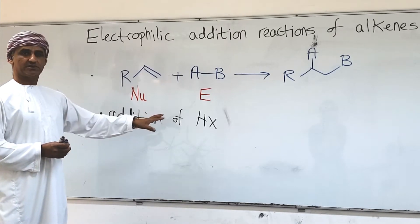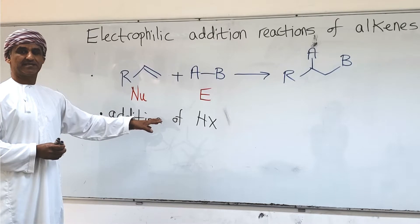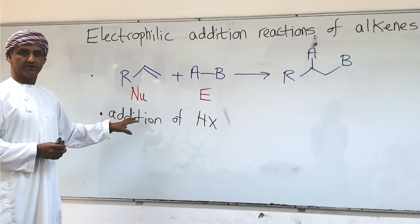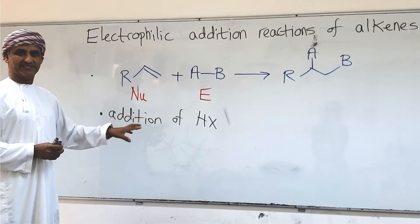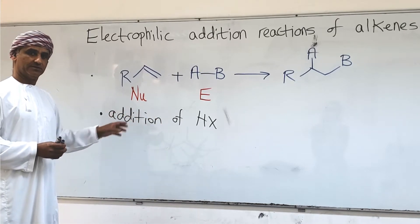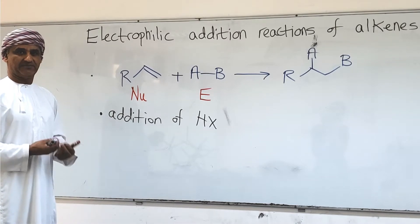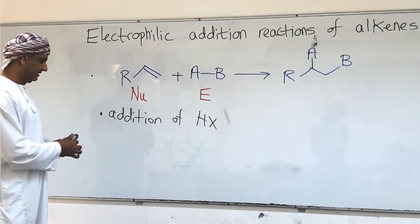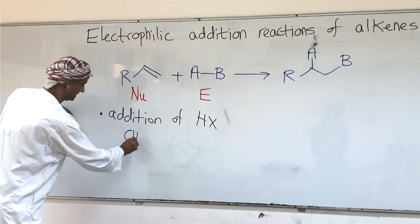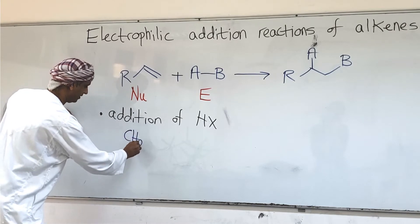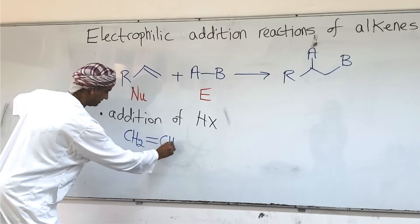The hydrogen atom of HX will bond with one carbon of the carbon-carbon double bond and X will bond to the other carbon. Let's take a simple alkene — ethylene, the simplest alkene with a carbon-carbon double bond.